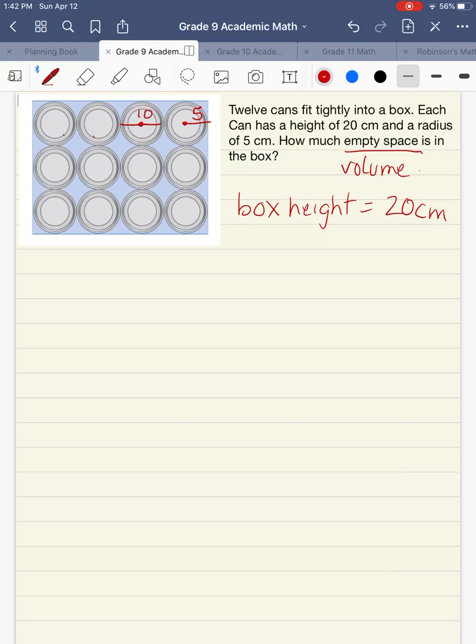Each of these cans is 10 centimeters across. So this means that the length of our box is going to be 40 centimeters because we have 10 plus 10 plus 10 and then plus 10. And the width of our box is going to be 30 centimeters because we would have 10 plus 10 plus 10.